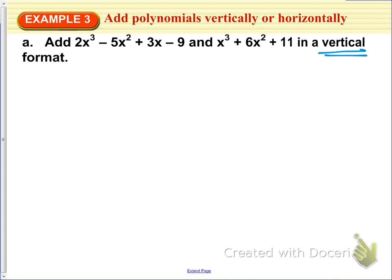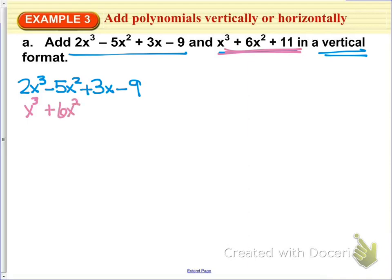But the vertical format means that you would line up your powers vertically. So you would do, for example, 2x to the third minus 5x squared plus 3x minus 9 for the first one. And then you would line up your second polynomial, lining up each of your terms that has the same exponent. So x to the third would go there, plus 6x squared would go here, plus 11 would go here.